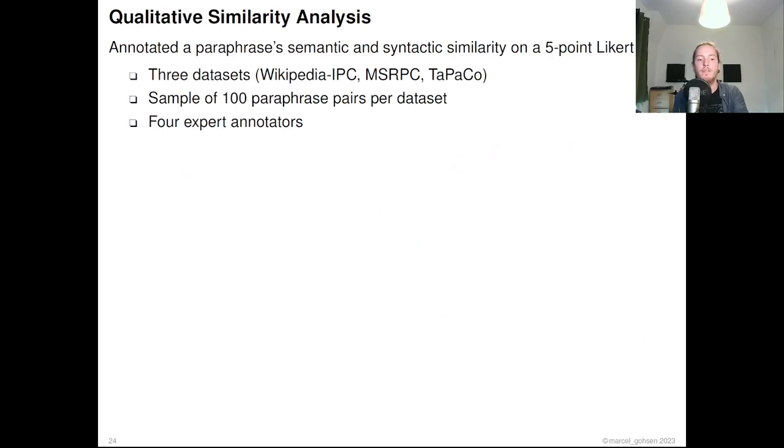In a qualitative similarity analysis, we wanted to further investigate if the used metrics actually quantify what we saw in the previous experiment. For that, we annotated 100 paraphrase pairs each from three datasets with the semantic and syntactic similarity on a 5-point Likert scale with four expert annotators.